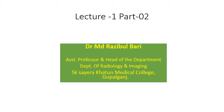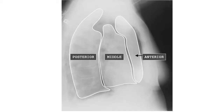This is Part 2 of this lecture, which is very important. Here you will see the lateral view of the chest X-ray, showing different cavities or different areas of the chest X-ray seen in lateral view — areas where we have to look carefully.